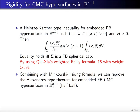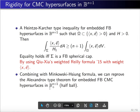Recall that the classical Heintze-Karcher-type inequality is given by the boundary integral of 1 over H₁ being greater than or equal to the volume. Here we have a weight x·e. We use Chow's weighted divergence formula with weight x·e to establish this. Combining this Heintze-Karcher-type inequality with the Minkowski-type formula, we can reprove the Alexandrov-type theorem for embedded free boundary CMC hypersurfaces in a half-ball.